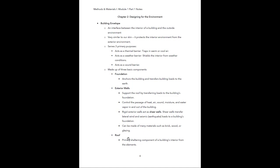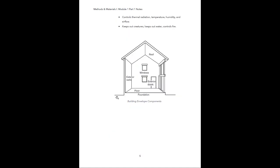Next is the roof. The roof is the primary sheltering component of the building's interior from the elements. The roof also controls thermal radiation, temperature, humidity, and airflow, and it keeps out creatures and water and controls fire. Looking at the diagram here, you can see the basic components of the building envelope: the foundation, the exterior walls, and the roof. The exterior walls can be a solid material or, as shown here, a glazing material.